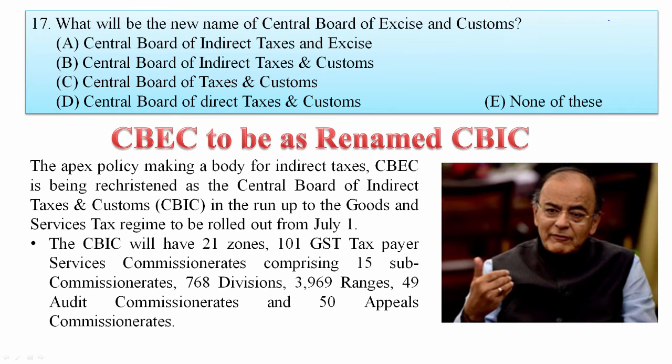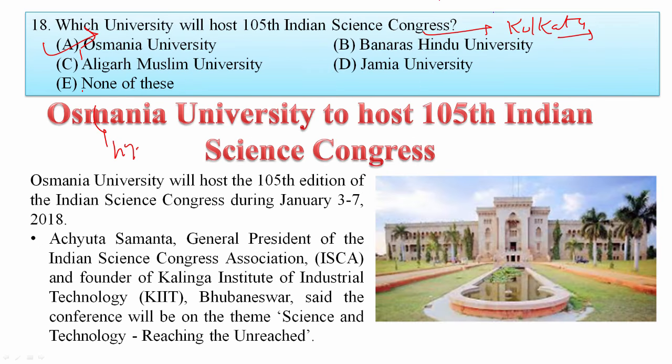What will be the new name of the Central Board of Excise and Customs? CBEC is being renamed as CBIC — Central Board of Indirect Taxes and Customs — in the run-up to the GST rollout from July 1st. Your answer is B — CBIC.